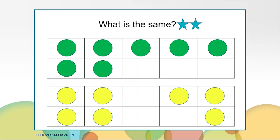Before we get started, let's get our math brains warmed up by looking at these pictures. What is the same in both pictures? They are the same because they both have counters, they both have seven counters, and they both use a 10 frame. Can you think of anything else that is the same?